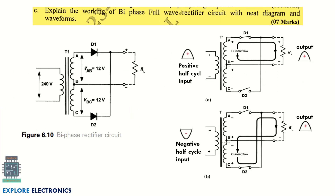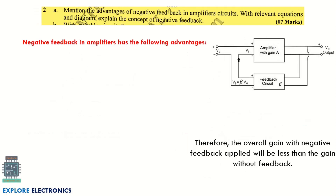The third question is on the full wave rectifier — specifically the biphase full wave rectifier, which is the center-tapped full wave rectifier. You need to draw the main circuit, then show how the circuit behaves during the positive half cycle and the negative half cycle, explaining which diode is on and which diode is off in each case.